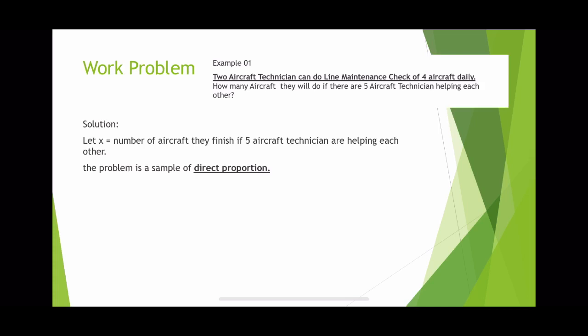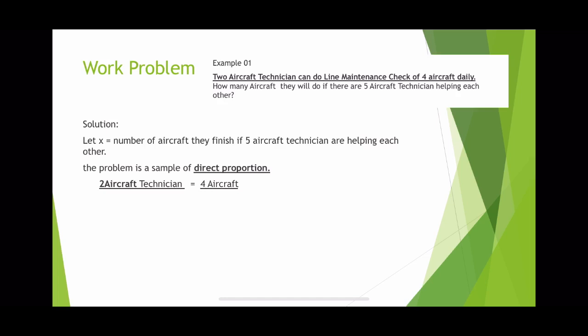This problem is a sample of direct proportion, because two aircraft technicians can do a line maintenance check of four aircraft daily, and five aircraft technicians can do how many aircraft — that is what the problem is asking. Therefore, if there are five aircraft technicians helping each other, they will do more aircraft. This is a sample of direct proportion.